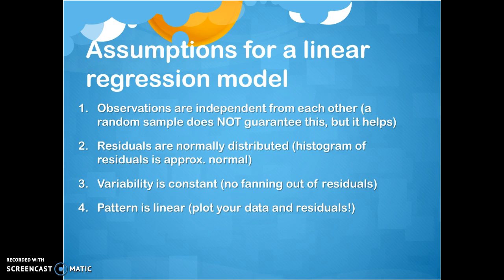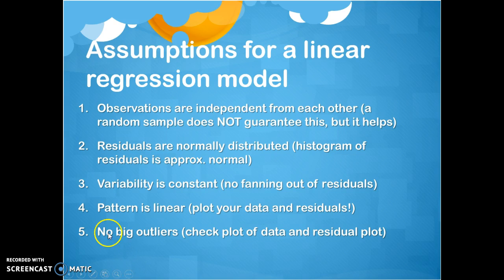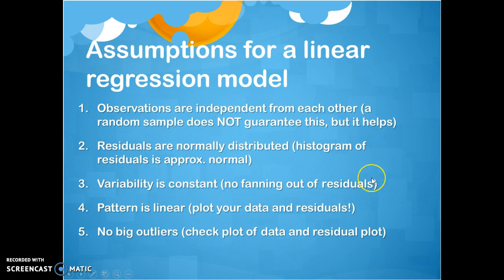We also want the relationship to be linear — we need a linear relationship in the first place in order to use linear regression. There are fancier things we can do if we don't have that, but for now just look at your scatter plot and see if it looks pretty linear. Related to variability and normality is having no big outliers. You can see this from your data or from residuals, but for now just plot your data and see if there are big outliers.